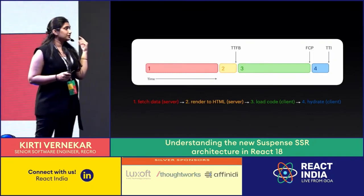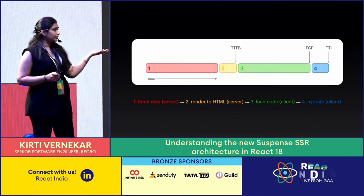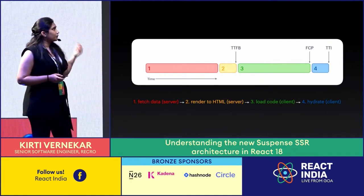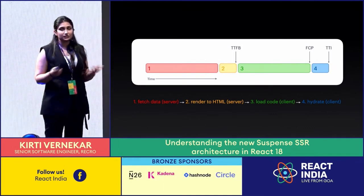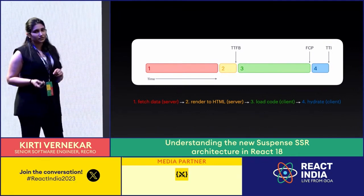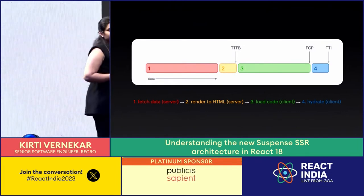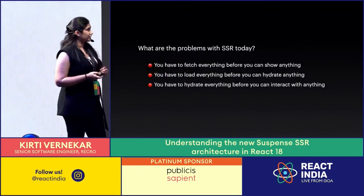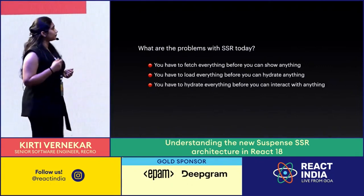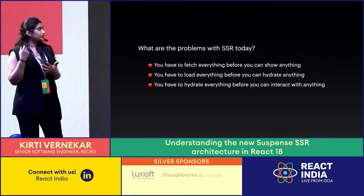Each of these steps have to happen sequentially and they block the user until the entire hydration process is complete, at which point the page becomes interactive. Even if most of your application is really fast, if there are just one or two components that are slow due to expensive data computation or a slow API, your time to first byte and first contentful paint will be increased for the entire application. You have to fetch everything before you can show anything, load everything before you can hydrate anything, and hydrate everything before you can interact with anything.